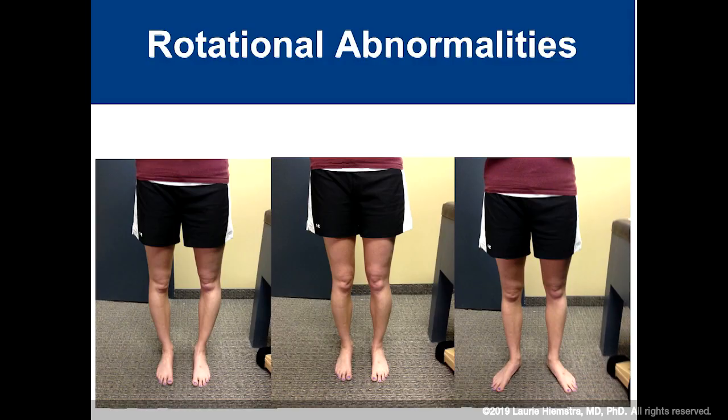The final thing I'd like to talk about is rotational abnormalities. You might look at this picture and think this girl has quite significant varus, but she's sitting there with her knees quite hyperextended. When I asked her to keep her knees at zero degrees of extension, you can see she really isn't a varus knee — that's her hyperextension. Her knees are quite straight, but you can see her patellas are still pointing in. When I asked her to stand so her patellas were facing forward, you can see she has a significant rotational problem. When you see those squinting patellas, really think about rotational abnormalities.